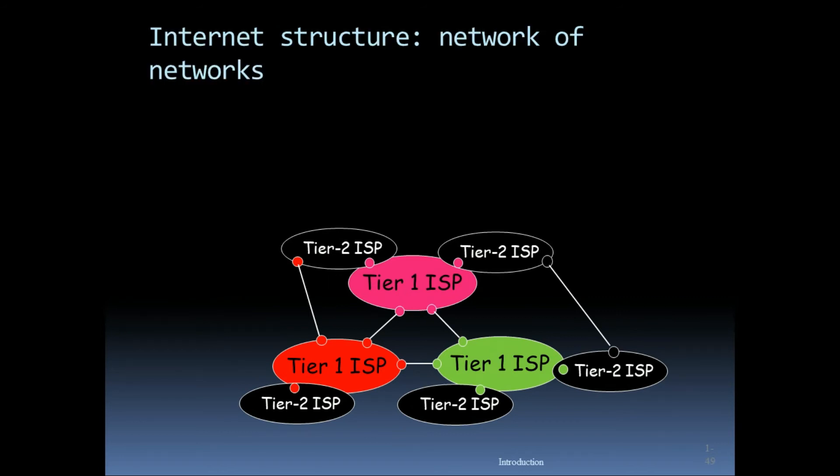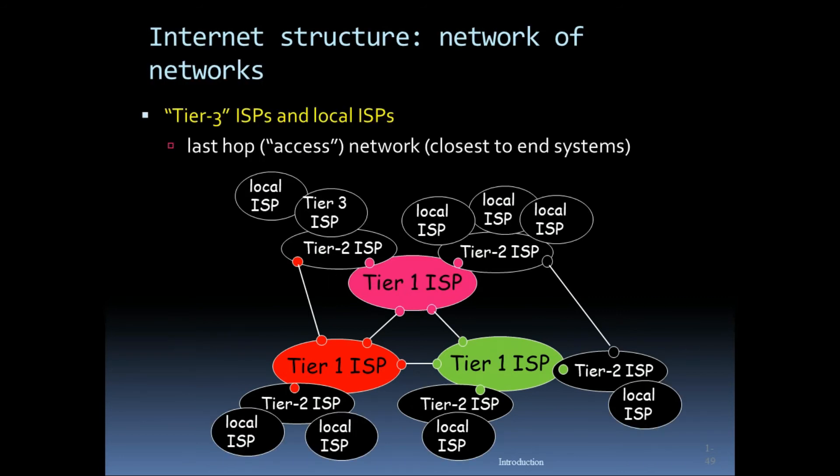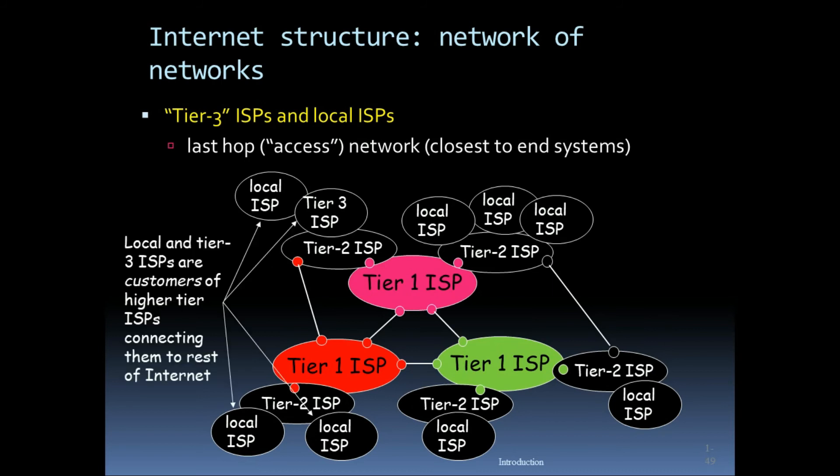Tier three ISPs are local ISPs and represent the last-hop access network, closest to end systems. Tier three ISPs are customers of higher-tier ISPs, connecting them to the rest of the internet.